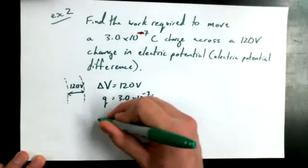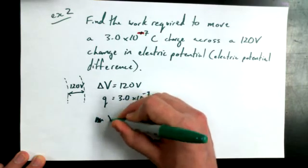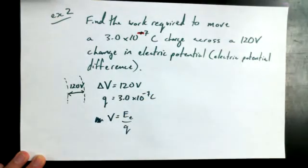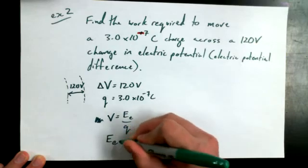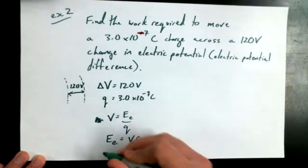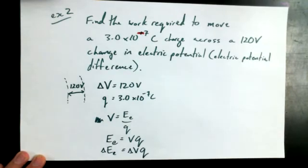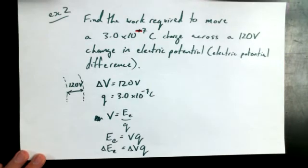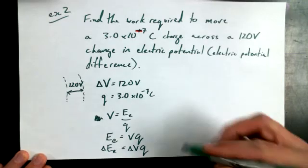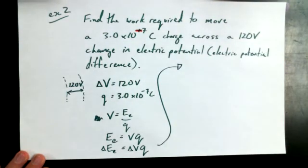We said V equals electric potential energy over charge, so E equals V times Q, and therefore a change in E equals a change in V times Q. The 120 volts I chose because it's a fairly common household voltage — around 110 to 120 volts in North America, though it differs in other countries.